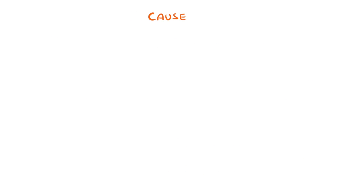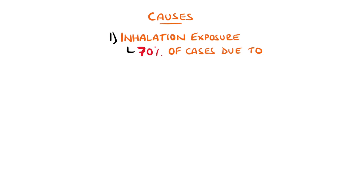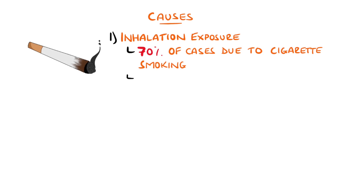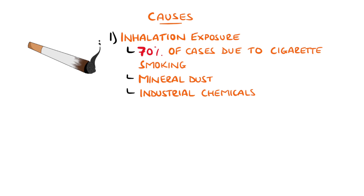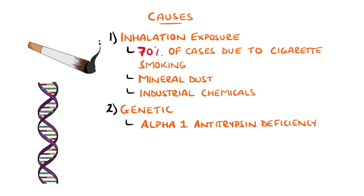The principal cause of COPD is exposure to inhaled chemicals, primarily smoking, where it is thought that up to 70% of cases are due to cigarette smoking. Other exposures such as pollution, mineral dust, or chemicals also increase the risk, but are not as commonly the cause as smoking. Genetics are also a cause, with many genetic variants showing increased likelihood of developing COPD, but in particular to remember is alpha-1 antitrypsin deficiency, again leading to a relative excess of protease activity.